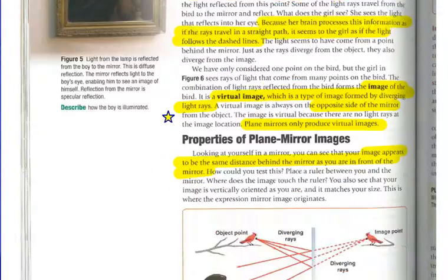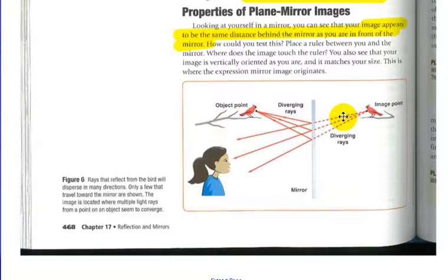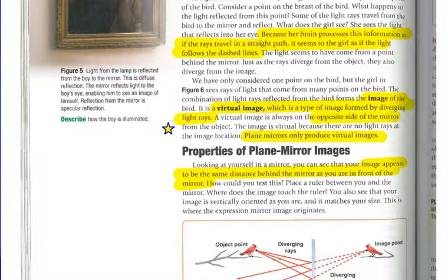The image is virtual because there are no light rays at the image location. So, there aren't real rays of light coming from there. When we look at concave and convex mirrors, we will see that you can actually have lines come from the image, but in this case, it's not happening. And, a key thing to note, plane mirrors only produce virtual images.